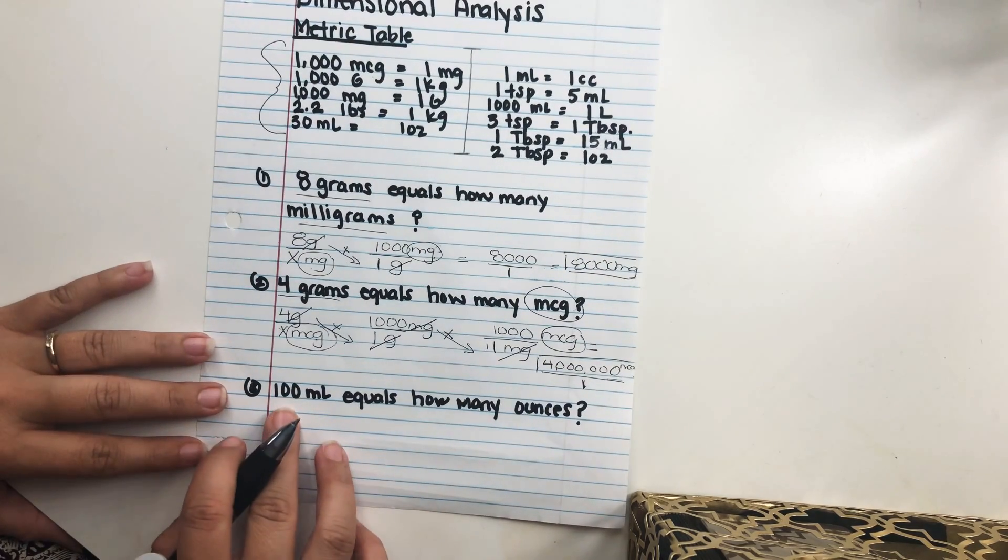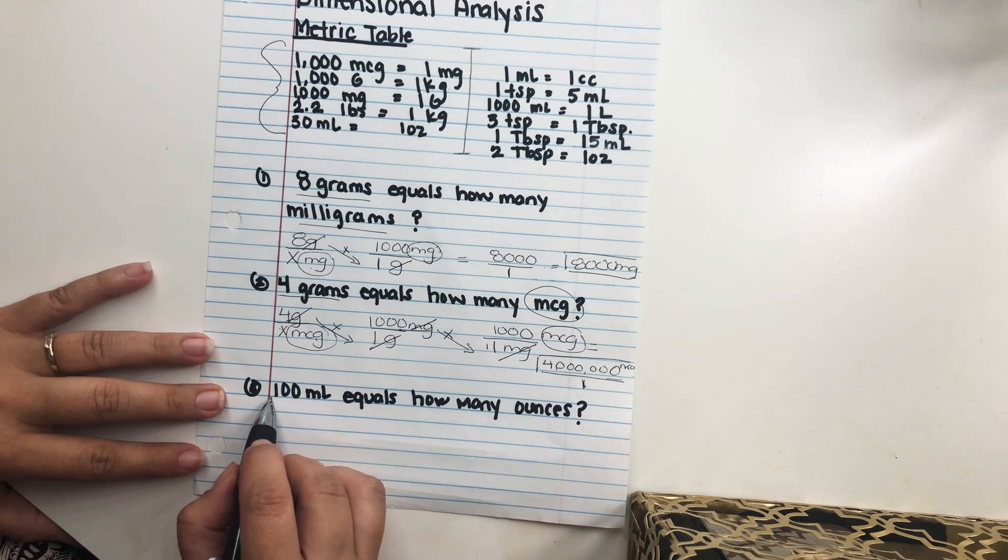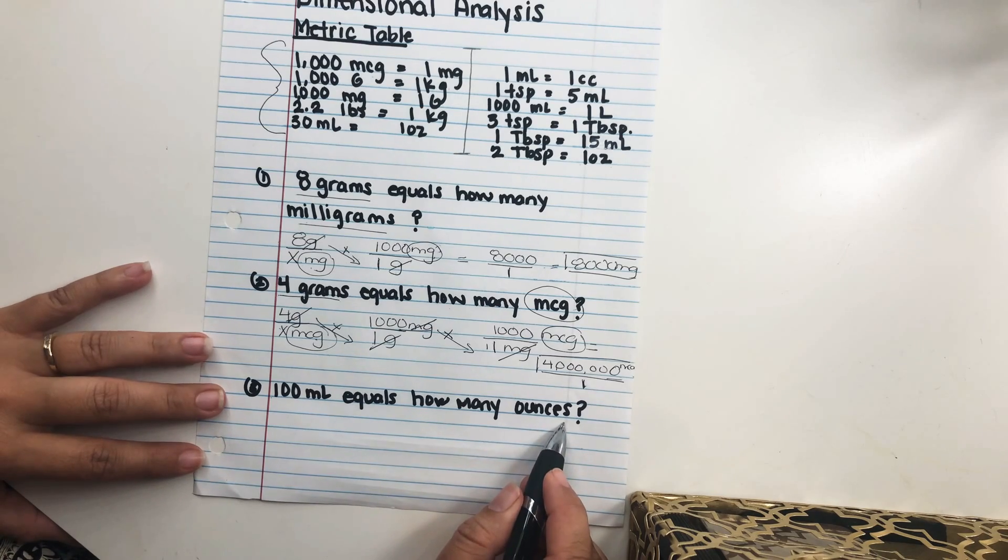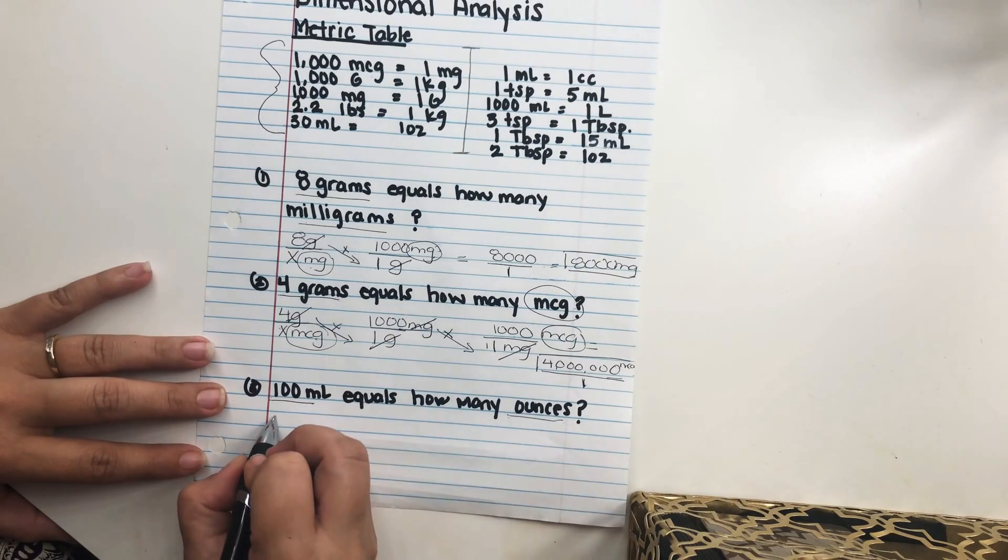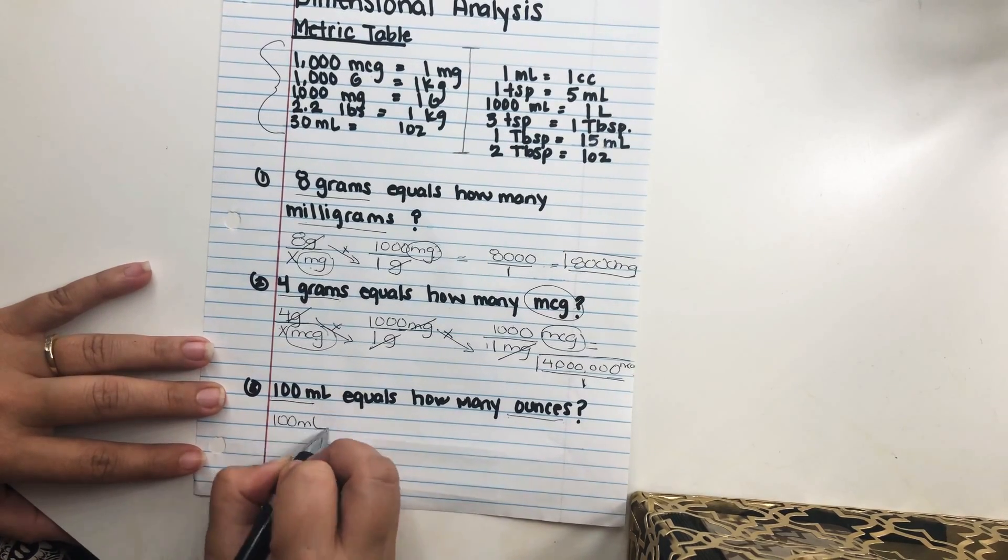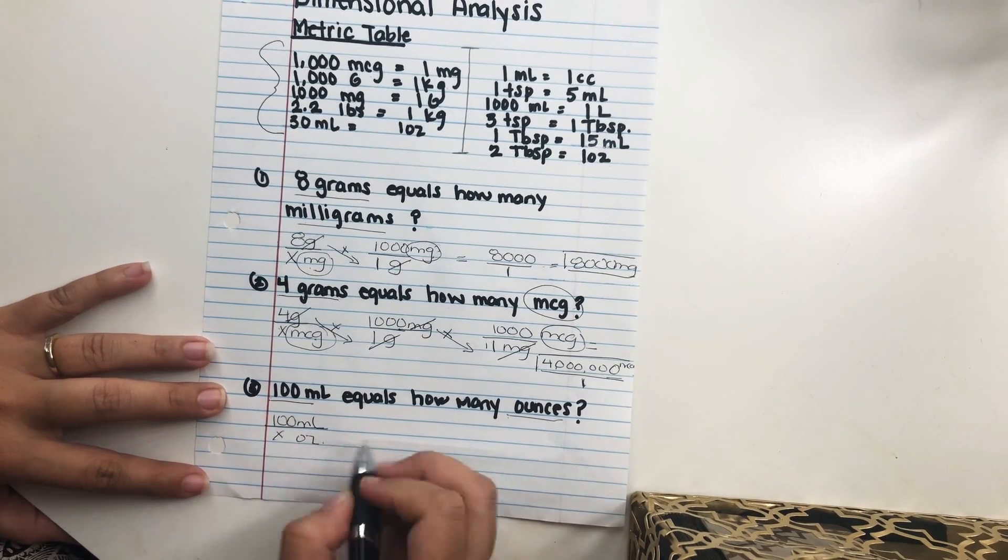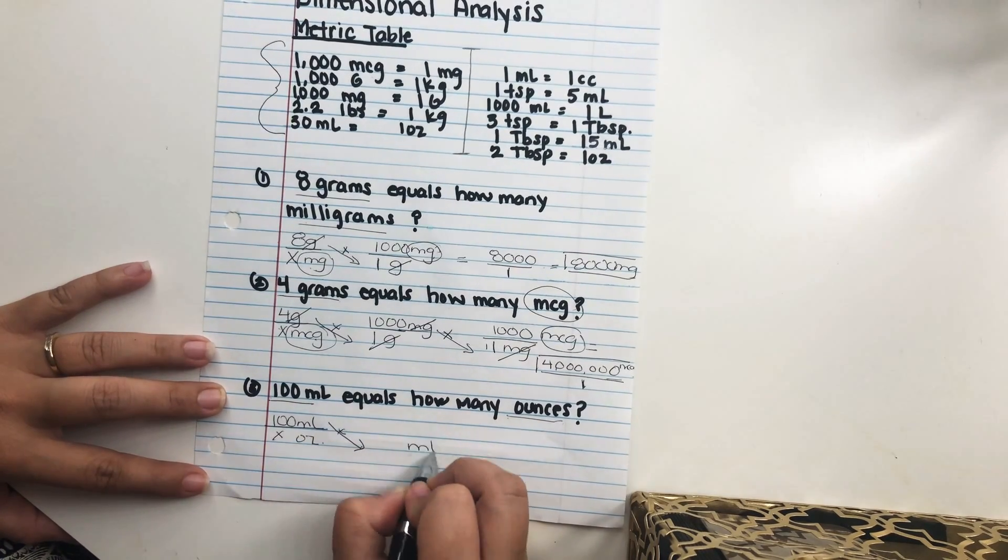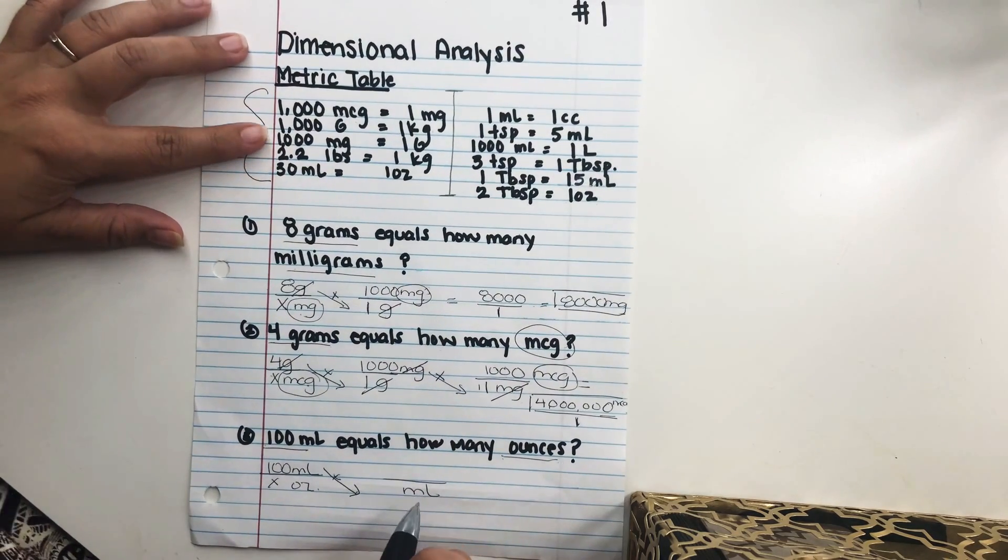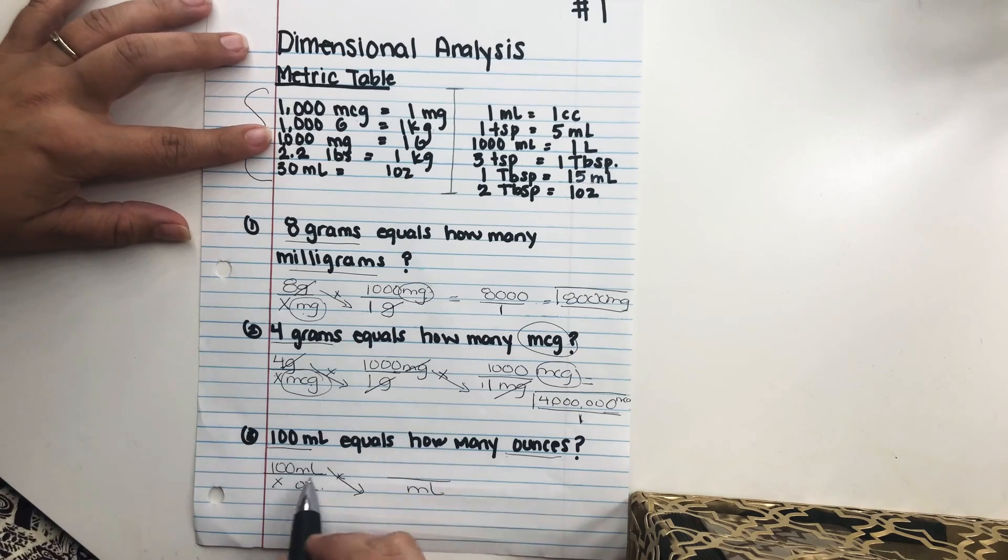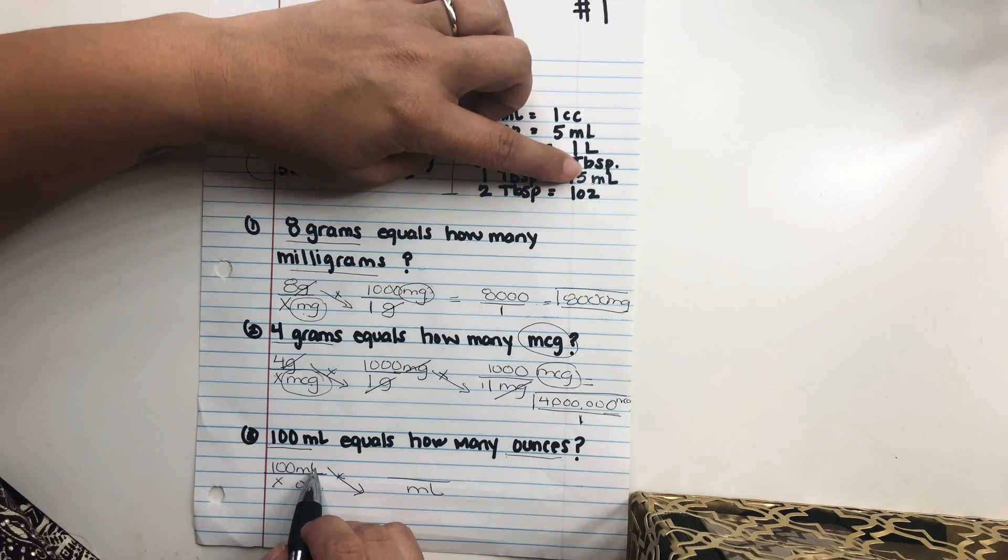Our next problem is a little more complex. We are going to have to convert again. We have 100 milliliters equals how many ounces. So this is a little different. We use our information we have. We know that we have 100 milliliters and we need ounces. Okay. So we have milliliters here. We need milliliters here. So we have to go into our metric table here and kind of figure out where to begin. We need milliliters. So let's go ahead and look at milliliters. We know that one tablespoon equals 15 milliliters.